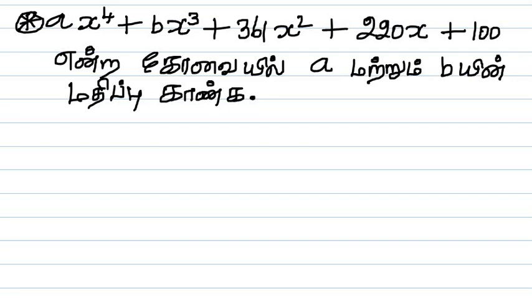So, here we have a small number — 169. Here we have 169. This is a square number, and this number is perfect. If we have a square root, we will be in this square number.